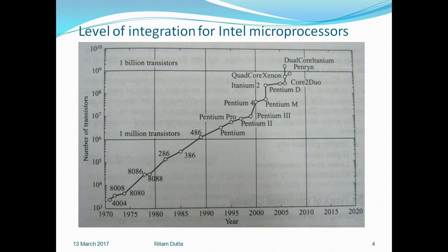This graph clearly depicts how, with the invention of technology, the number of transistors has been increasing and integrated into a single small IC. This particular graph was invented by Moore, and we also call this Moore's Law. The y-axis represents the number of transistors — that is the concentration of transistors — and the x-axis represents time.